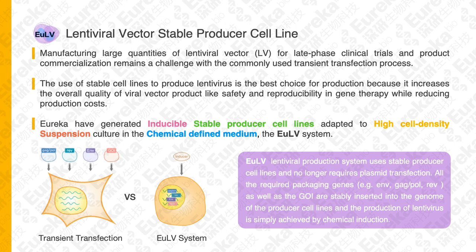This stable producer cell line no longer requires transient plasmid transfection. Instead, all the required packaging genes such as ENV, GAGPRO, and REV, as well as customized therapeutic genes — commonly called gene of interest (GOI) — are stably inserted into the genome of the producer cell line, and the production of lentivirus is simply achieved by chemical induction.